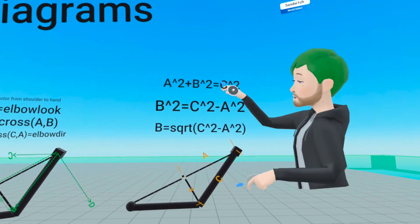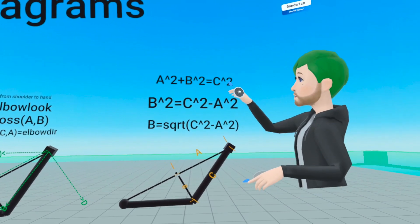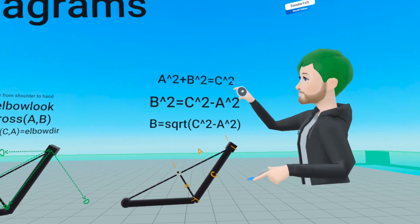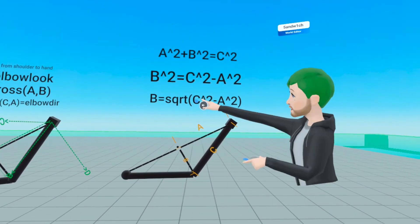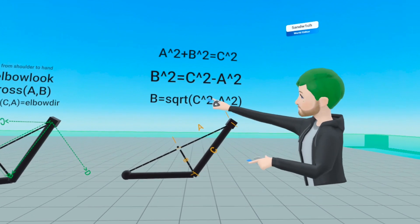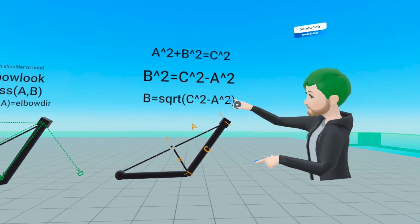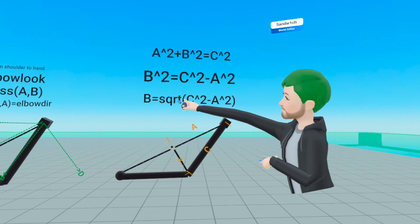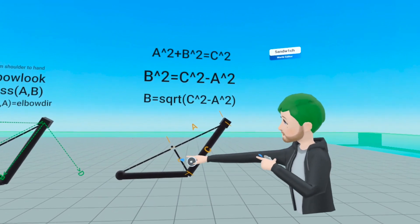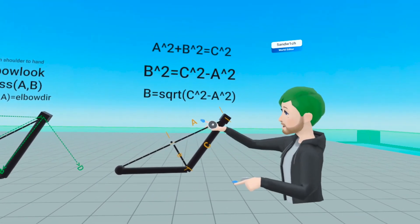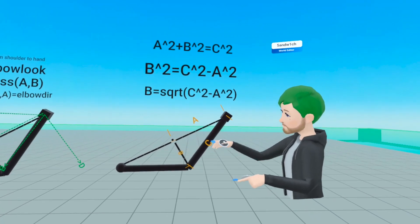This is the Pythagorean theorem: A squared plus B squared equals C squared. We're trying to solve for B, the length of the opposite. C squared minus A squared, then take the square root of all that — and you get B. That allows you to find the lengths of each side of this triangle.